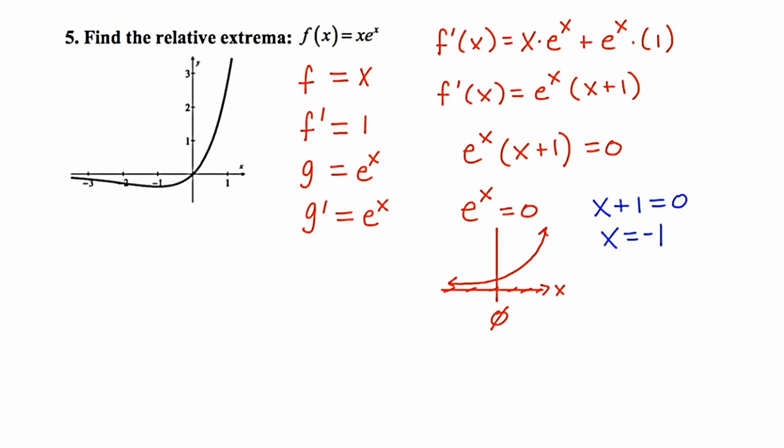Now let's assume that we didn't have the graph in front of our faces. How do we know if that negative 1 is a relative max or a relative min? Well, you'd have to use either the first or the second derivative test. So that's what I'm going to do now, is the first derivative test.